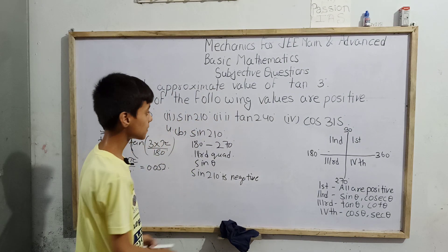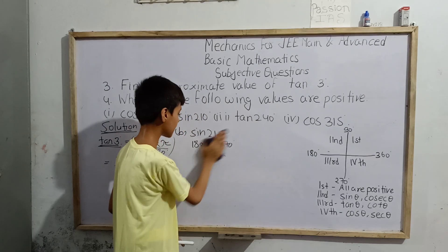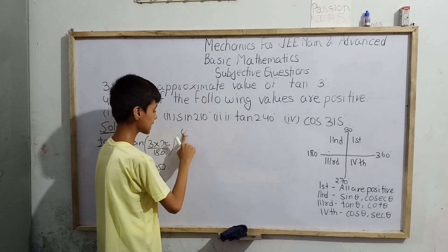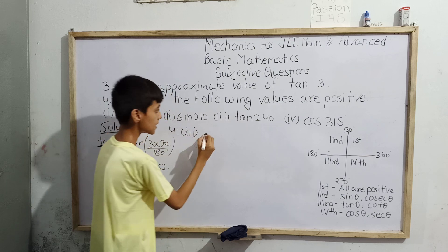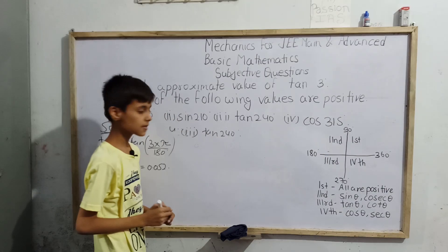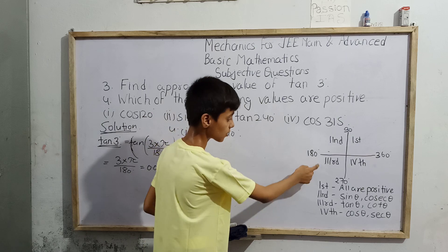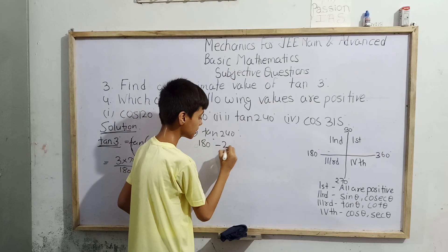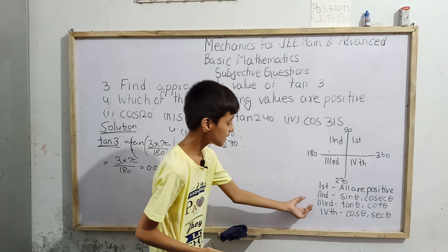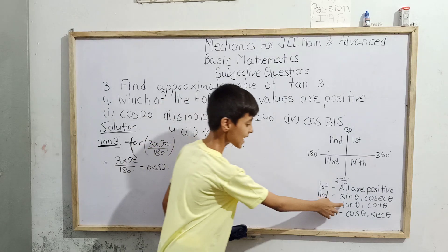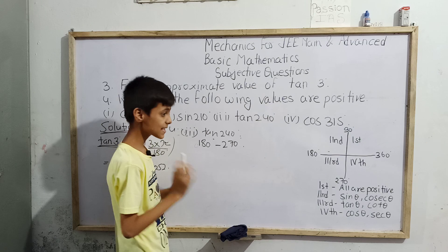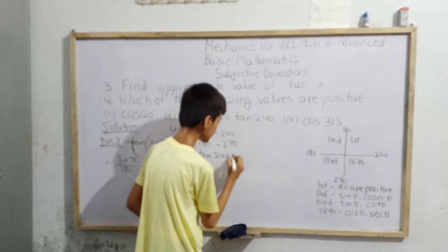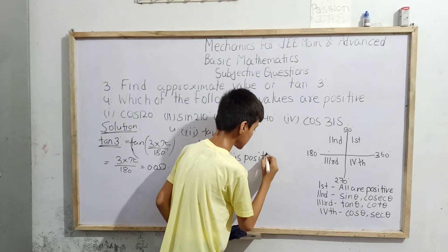Part (c): tan(240°). This also lies between 180° and 270°, so it is in the third quadrant. In the third quadrant, tan and cot are always positive. Since this is tan(240°), which is a tangent ratio, tan(240°) is a positive number.